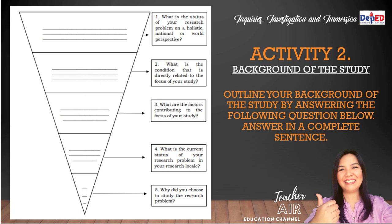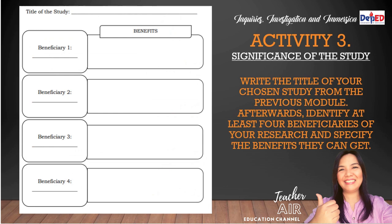Activity three is about the significance of the study. Please write the title of your chosen study from the previous module, then identify at least four beneficiaries of your research and specify the benefits they can get. Take a screenshot of this activity and answer it right after watching this video.